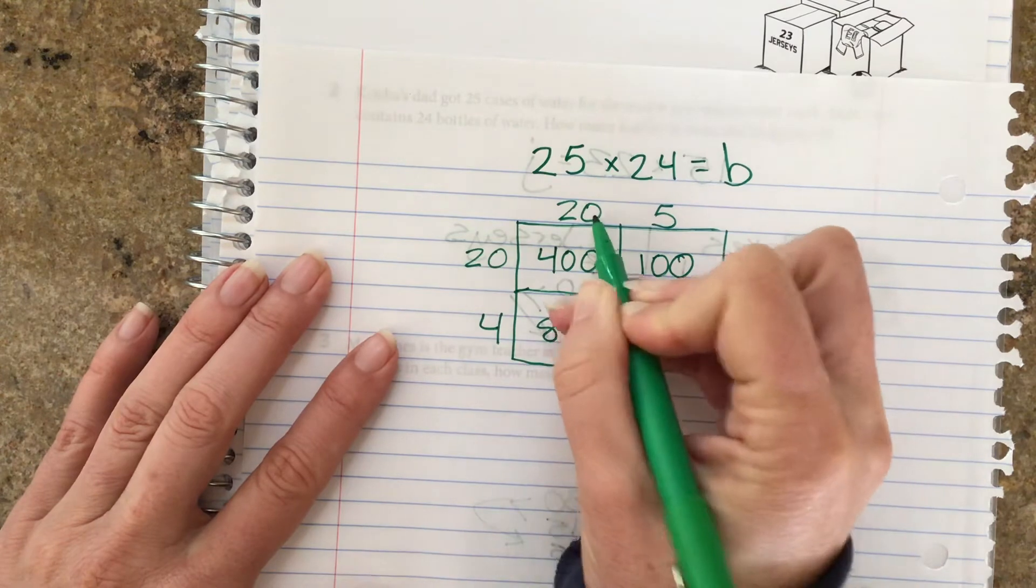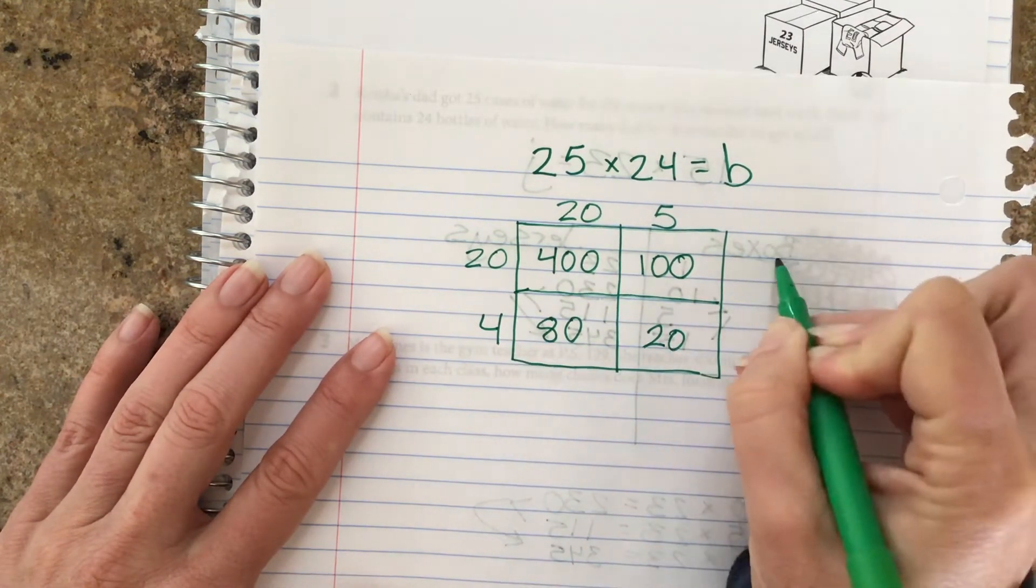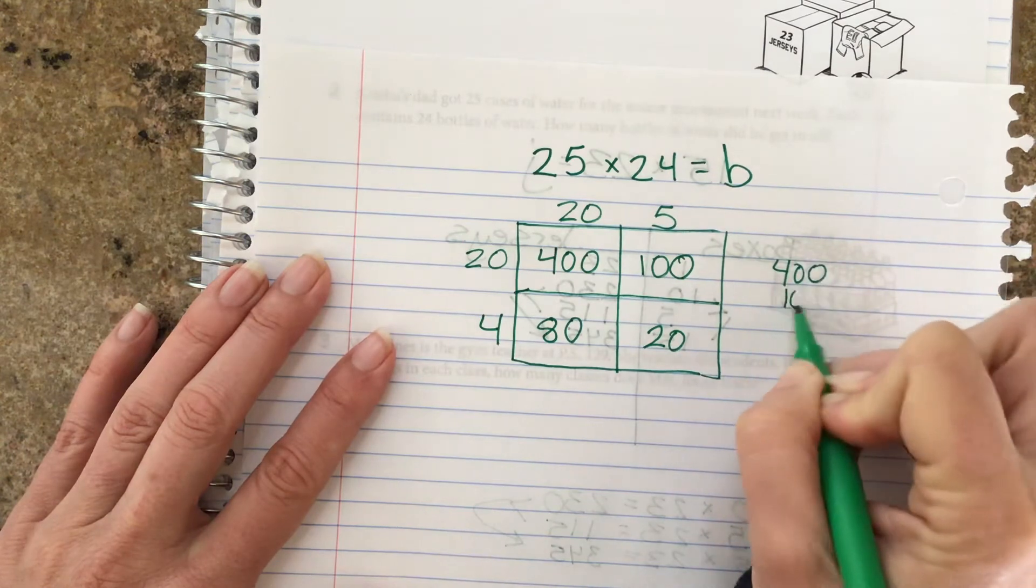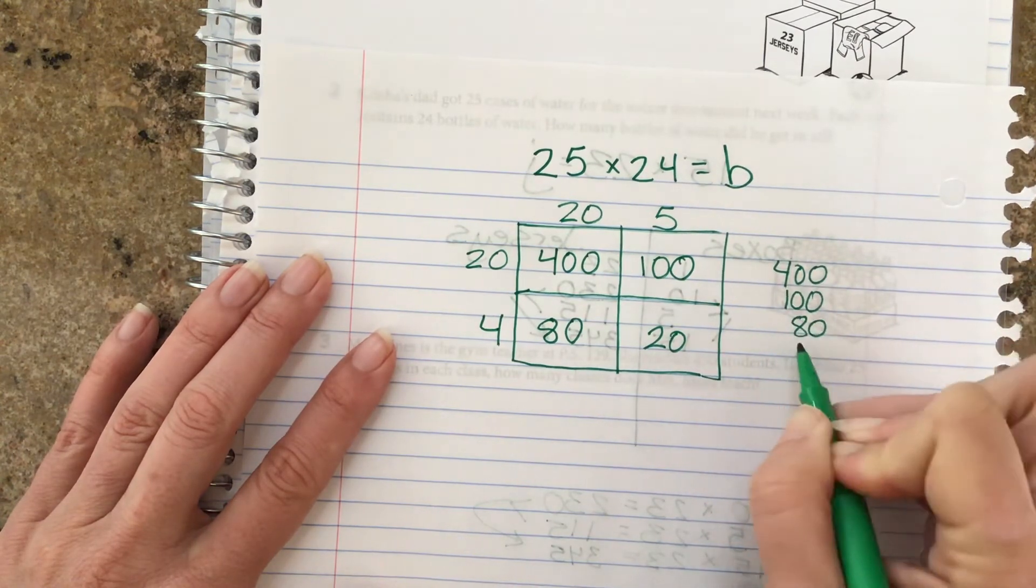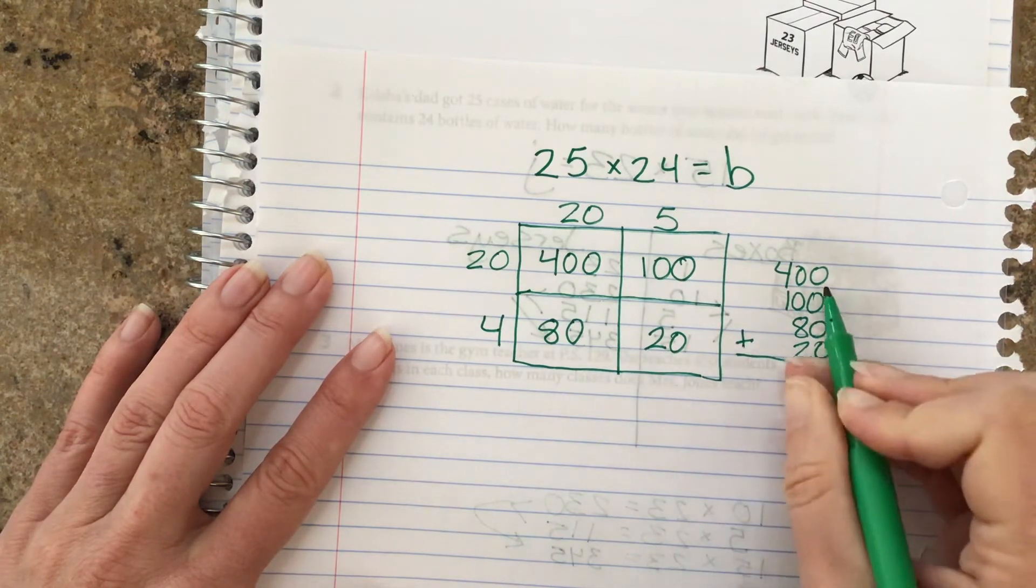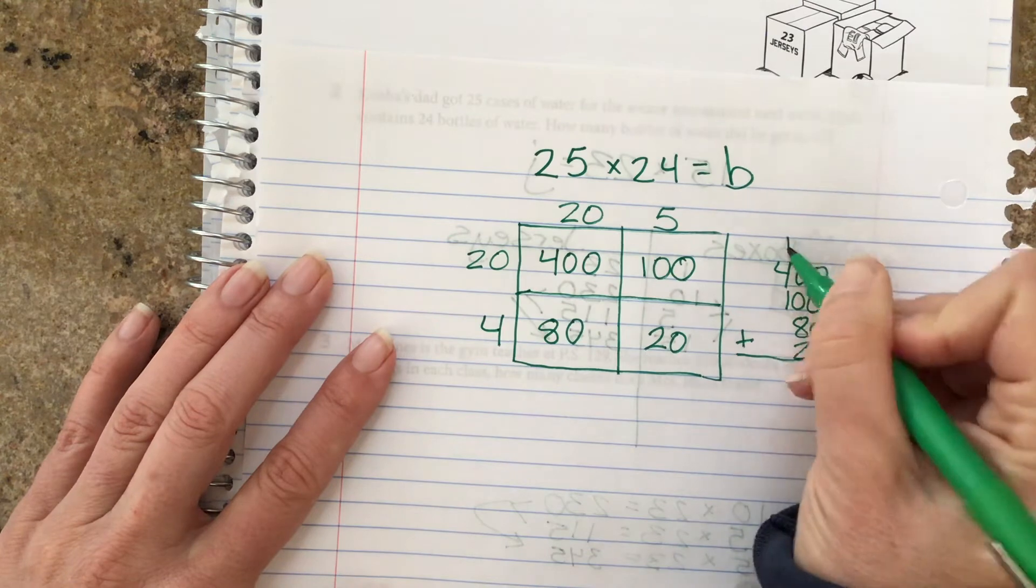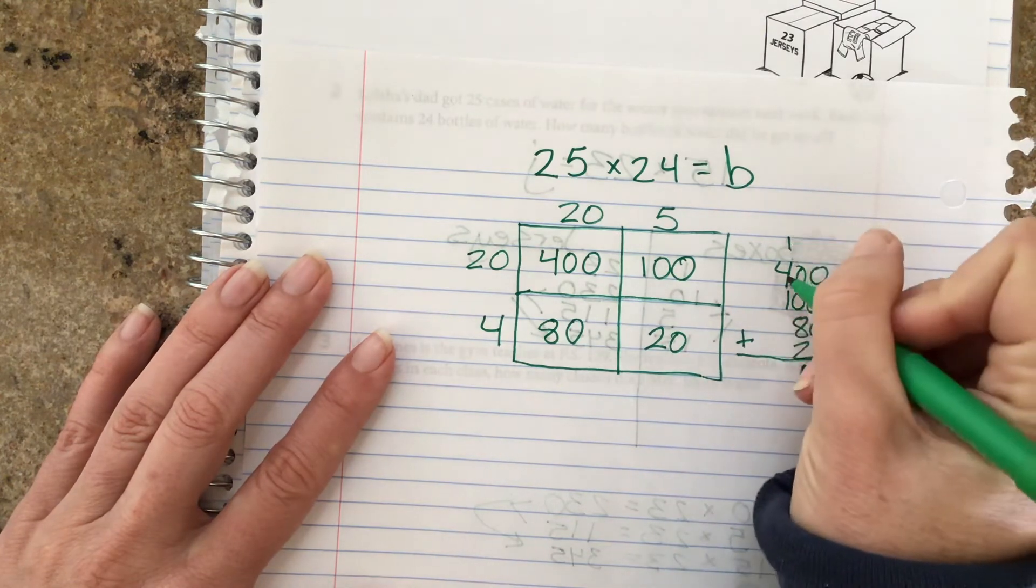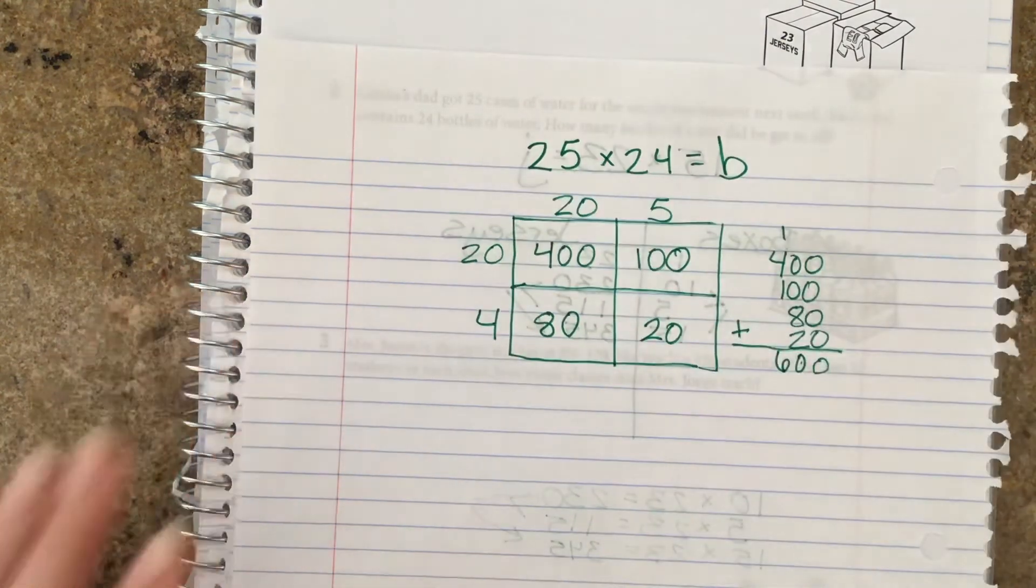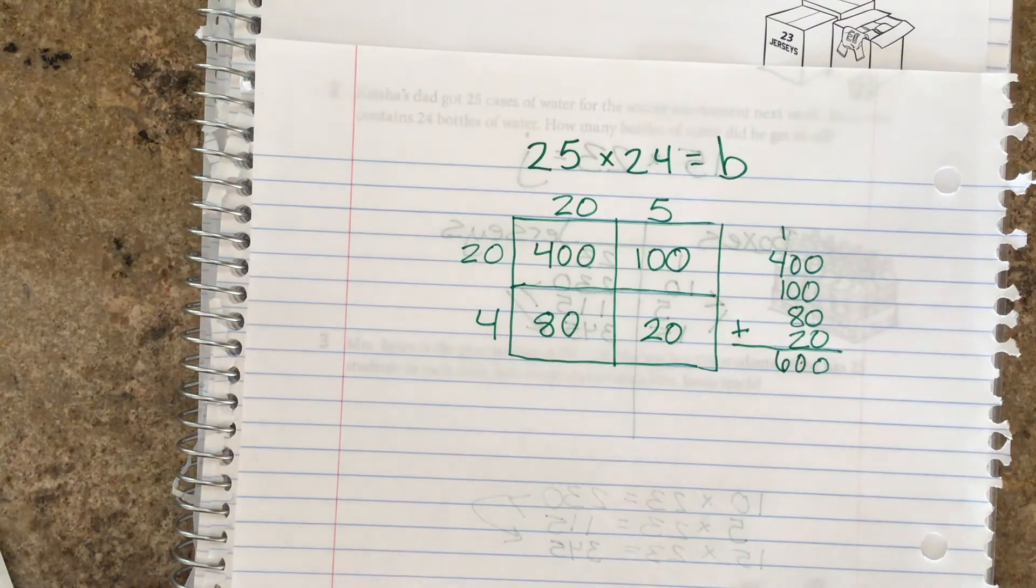We say 2 times 2 is 4 with two zeros, 2 times 5 is 10 with one zero, 4 times 2 is 8 with that zero, and 4 times 5 is 20. We're going to add these together. We've got zeros coming down, we have 8 plus 2 is 10, 1 plus 4 is 5 plus 1 is 6. Did you get 600 bottles? I hope so.